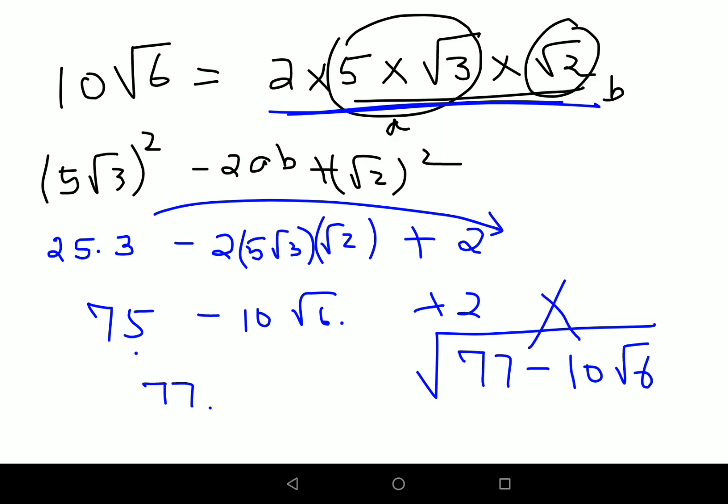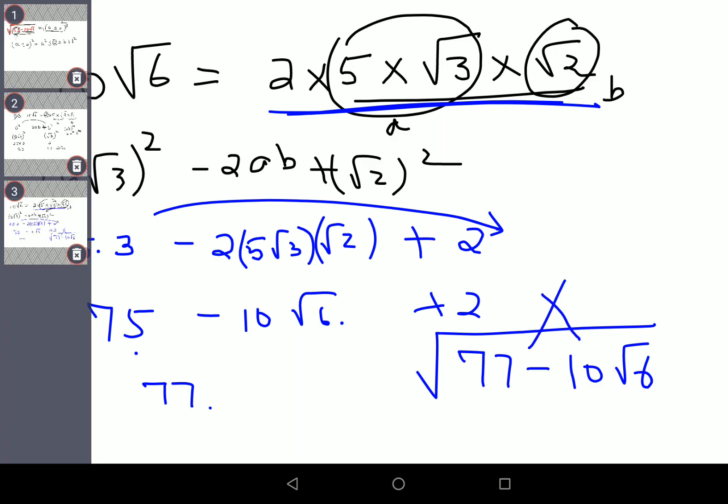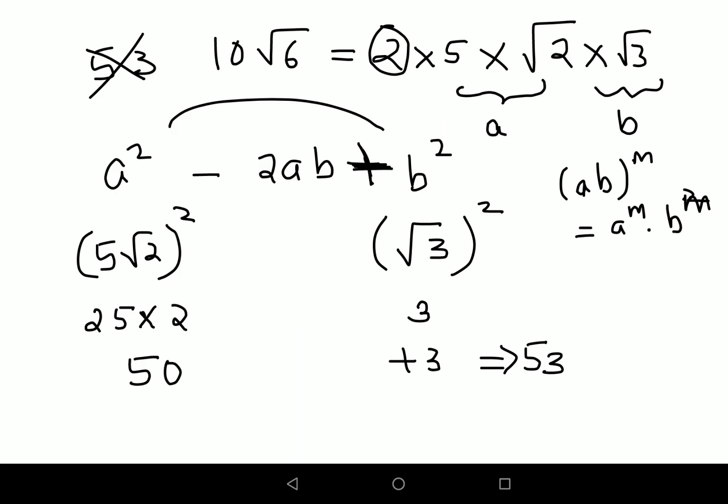If your question had something like 77 minus 10 root 6 then this entire formation would have been fine, but since this is not your question, your question is nothing but root of 53 minus 10 root 6. So in this case this particular formation of a being 5 root 2 the whole square and b being root 3 makes sense.